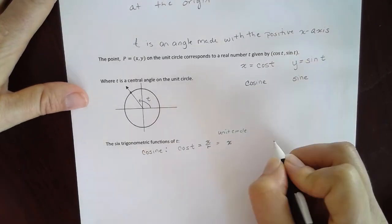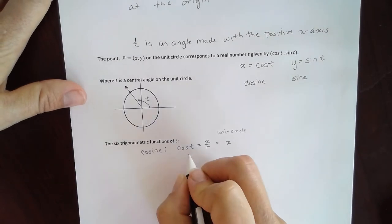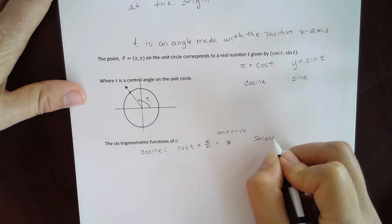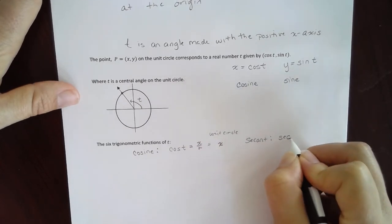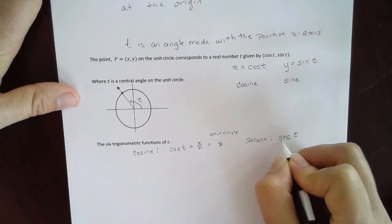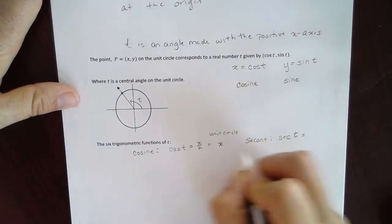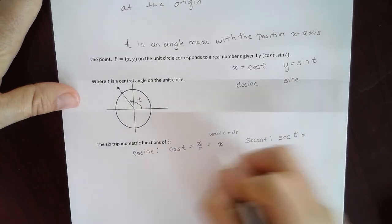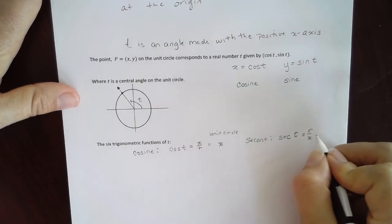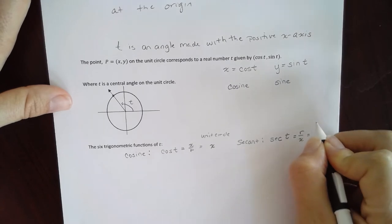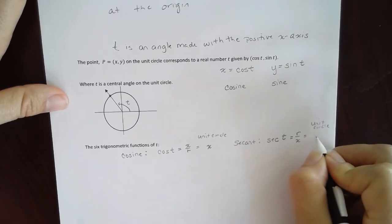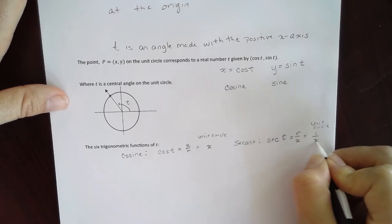And then the reciprocal of a cosine function is what we're going to call a secant. And its abbreviation is sec. So the secant of angle t will be equal to the reciprocal of x over r, which is going to be r over x. But in our case, for a unit circle, it's going to be 1 over x, because the r is equal to 1.